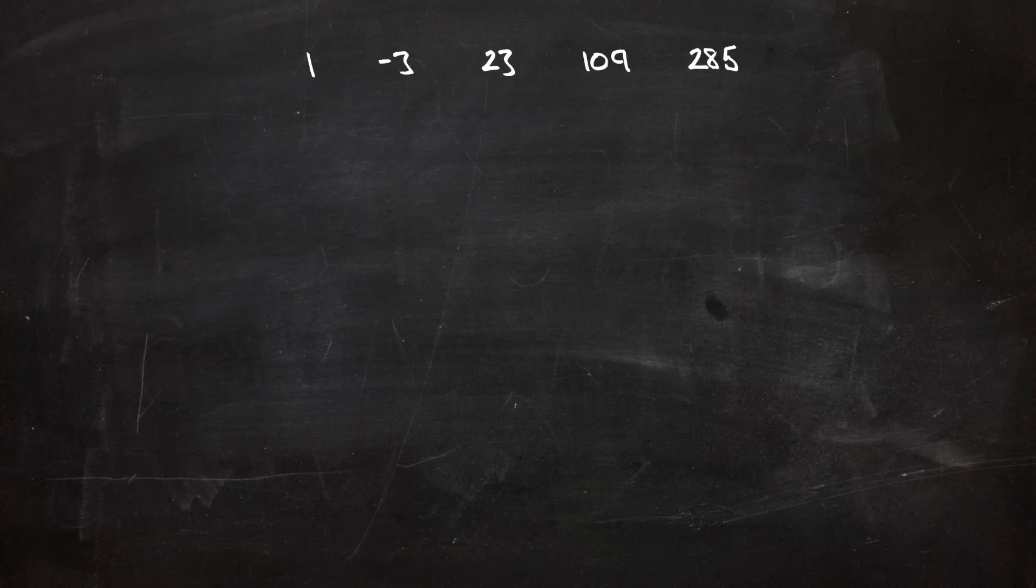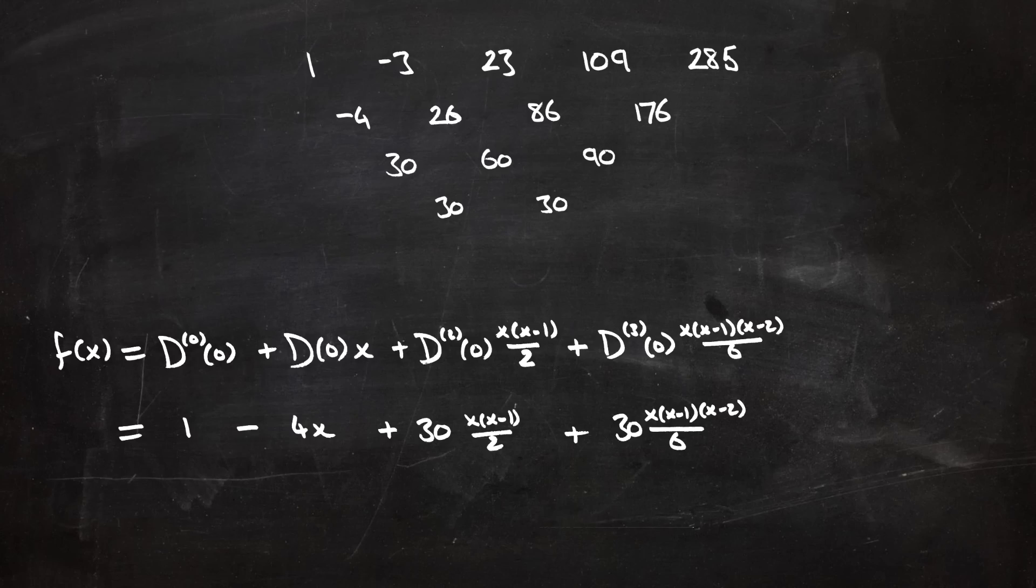Well, just like before, we write out our sequence, and then we look at the first differences, we look at the second differences. And in this case, we look at the third differences as well, until we get a constant. So that tells us that we're going to have a cubic polynomial. Now we can just use our formula. So the mystery polynomial is one minus four x plus thirty x, x minus one over two, plus thirty x, x minus one, x minus two, over six. And it's done. And really quite quickly as well.